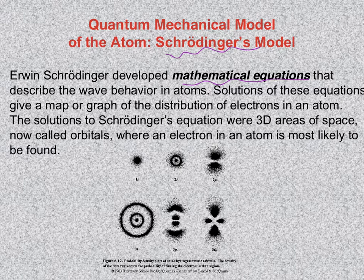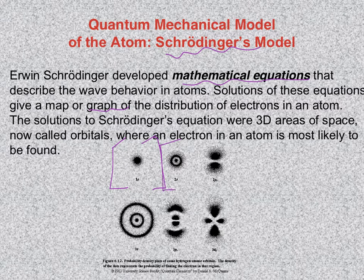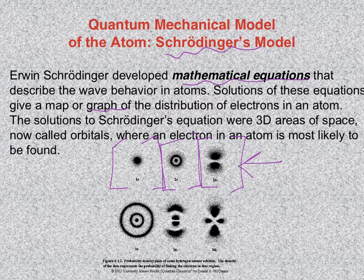It turns out that when you graph Schrödinger's wave equations, you end up with these three-dimensional representations of the wave behavior of electrons. What we call these solutions of Schrödinger's wave equations today are orbitals.